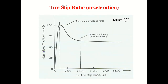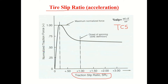Now let us look at tire characteristics. For tire slip ratio during acceleration, also called traction slip ratio, it is defined as (ω·r − v) / (ω·r). 100 percent slip means onset of wheel spinning. The tire performs very well when the slip is approximately 20 percent — that is where the maximum traction force is available.